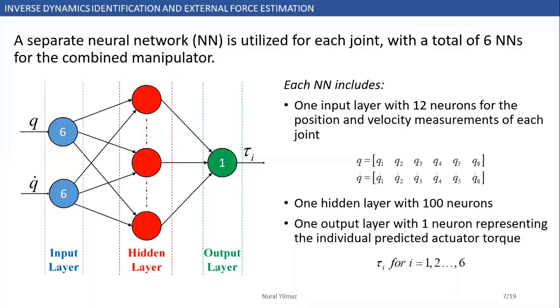As I already said, a separate neural network is utilized for each joint. In total, we make use of six neural networks for the DaVinci Research Kit. If we look at the network structure, each model has one input layer with 12 input neurons, which are position and velocity measurement vectors. There is one hidden layer with 100 neurons. Also, we have one output layer with one neuron representing the individual predicted actuator torque.